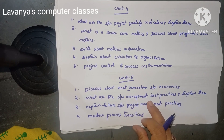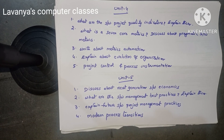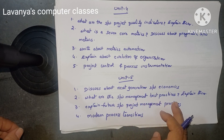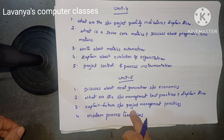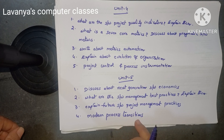Unit 5 questions: discuss about next generation software economics — important question. What are the software management best practices? Explain them. Explain future software project management, what are the software management practices, and what are the modern process transitions?